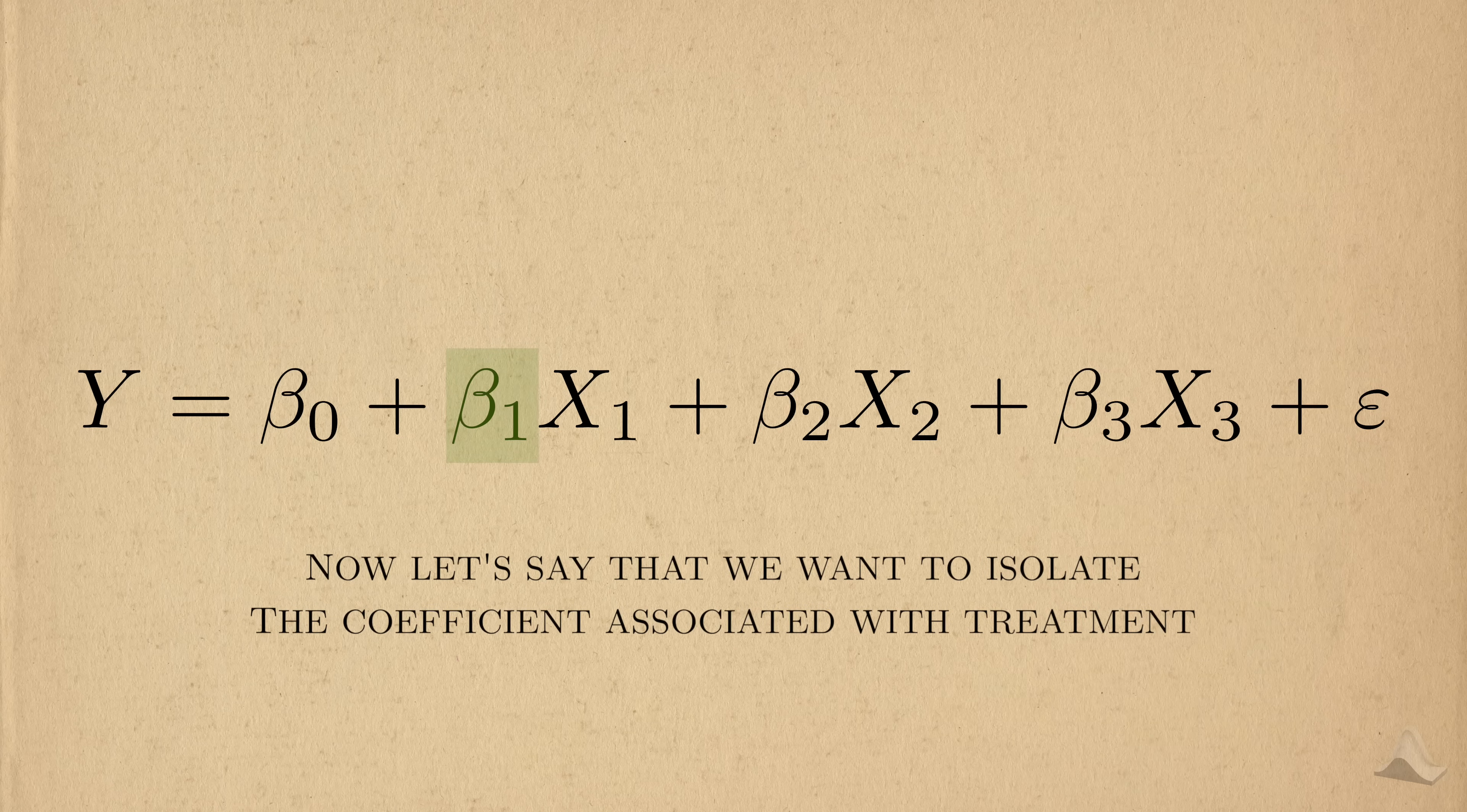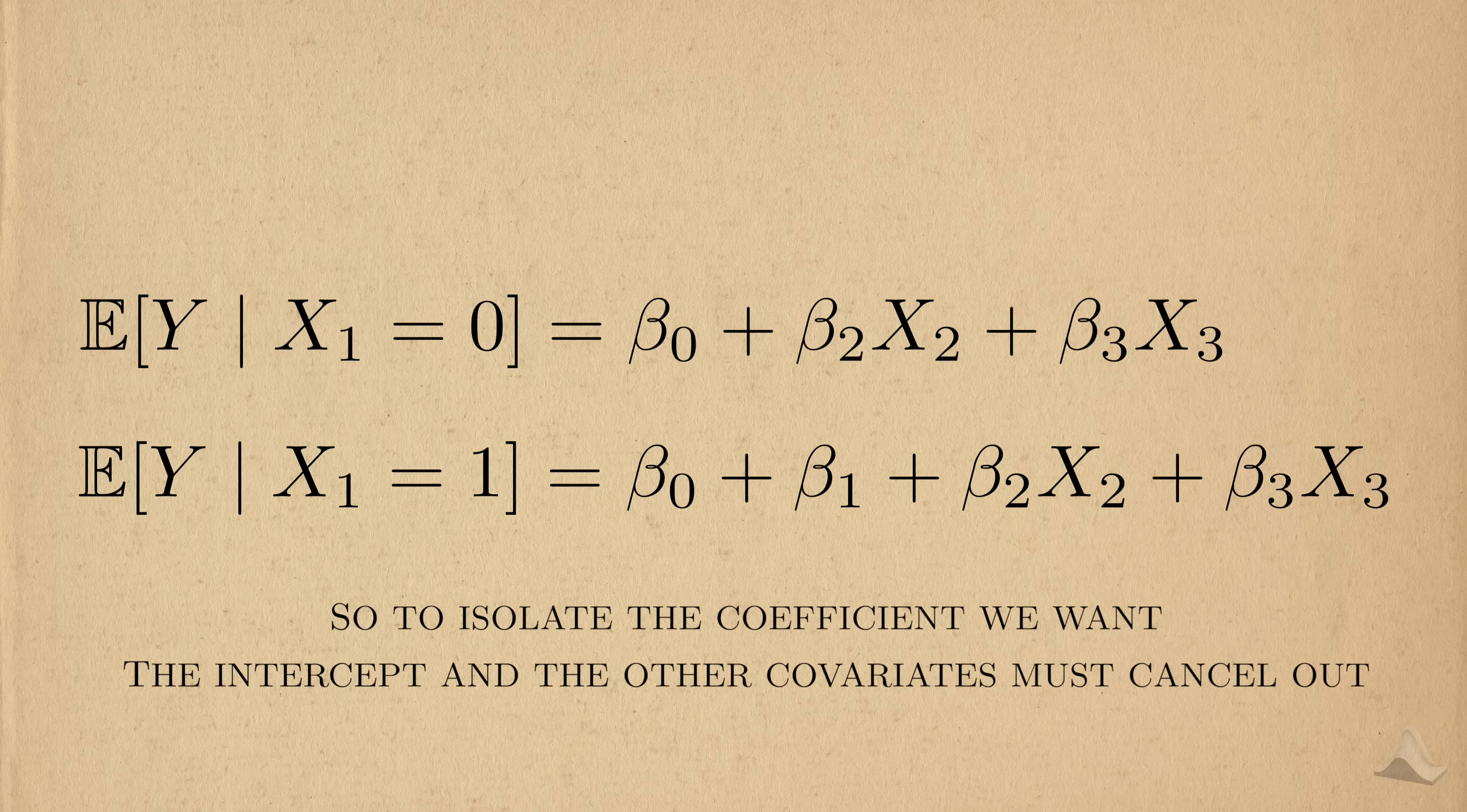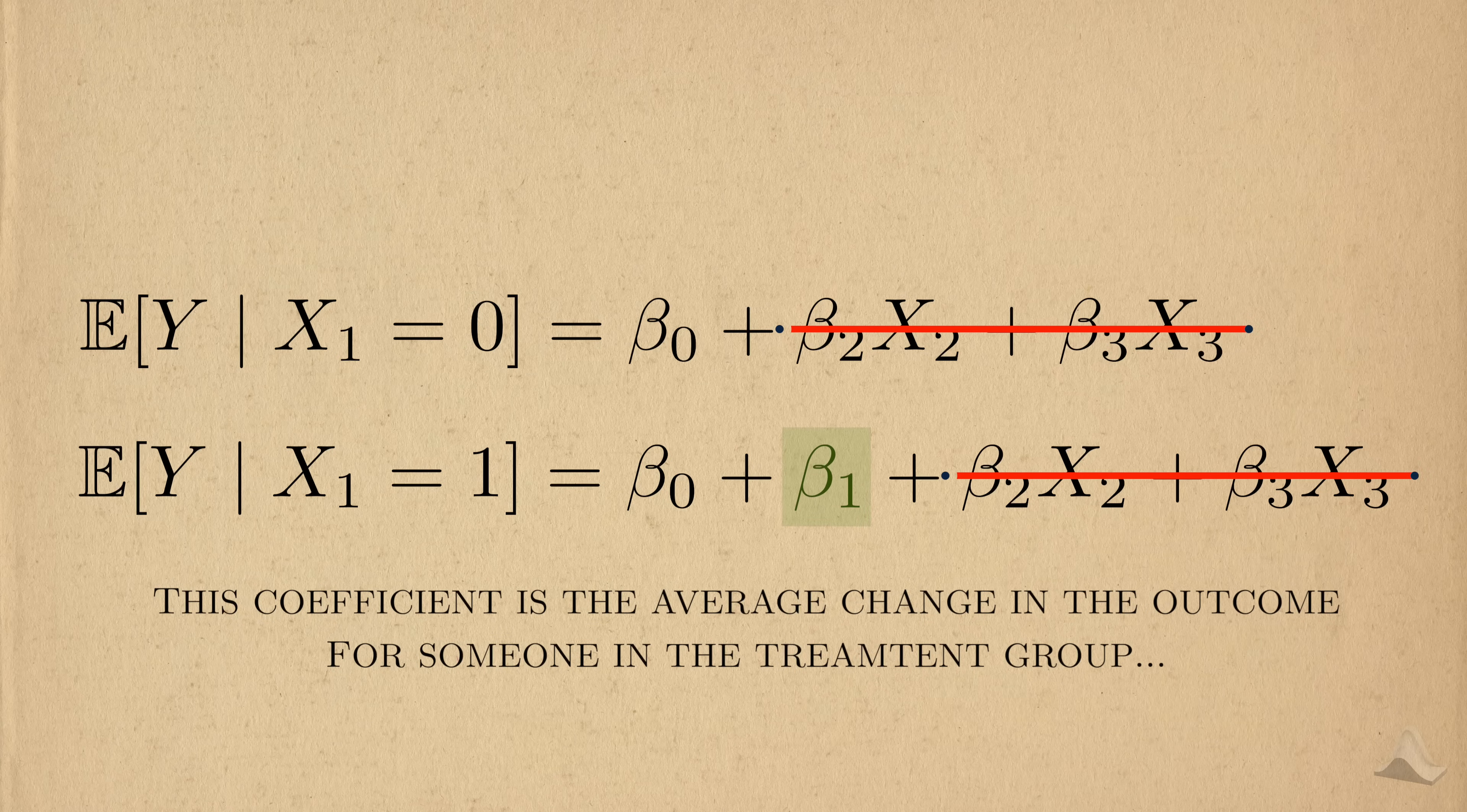Now let's say we want to isolate the coefficient associated with treatment. To do that, we can follow a similar strategy we did with simple linear regression. To compare the equations for the regression model when someone is on placebo versus when someone is on treatment. The added wrinkle here is that there are now two extra covariates that need to be cancelled out. So to isolate the coefficient we want, the intercept and the other covariates need to cancel out. And this will only happen if the covariates are held constant in both equations. But what does that mean in more concrete terms?